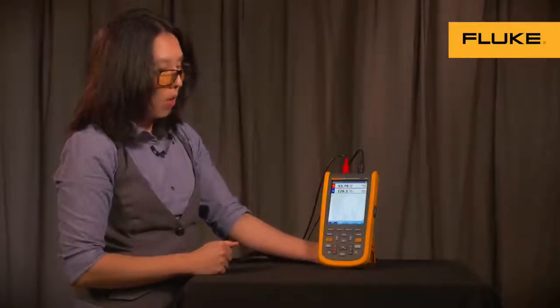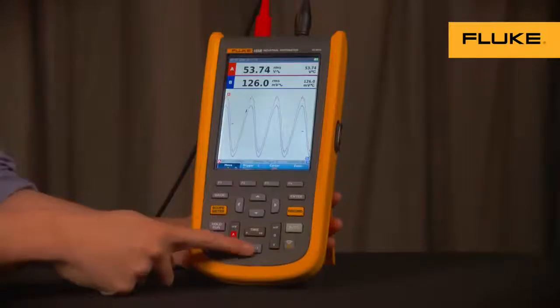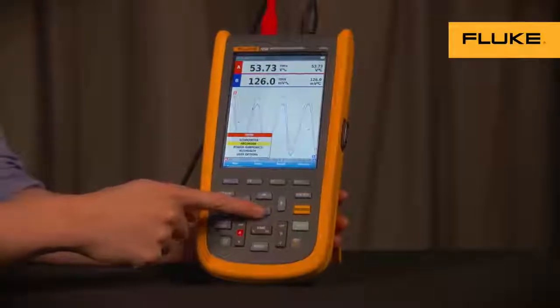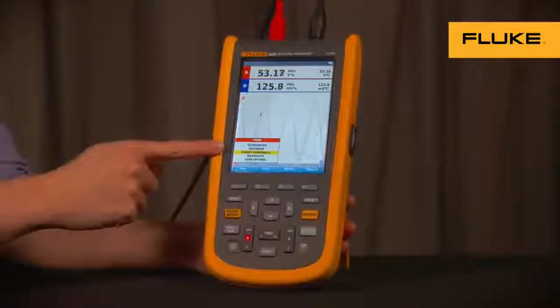To get to the power and harmonics mode, press the menu button, use the up and down arrows to get to power harmonics, then press Enter.